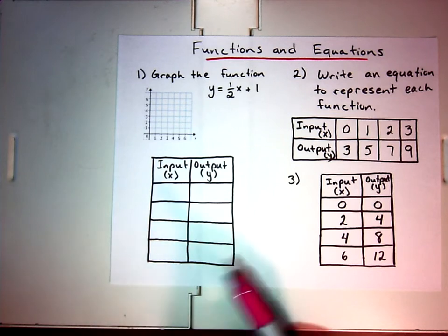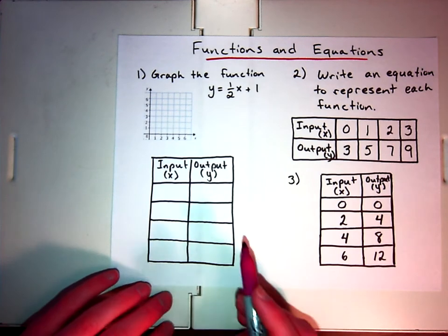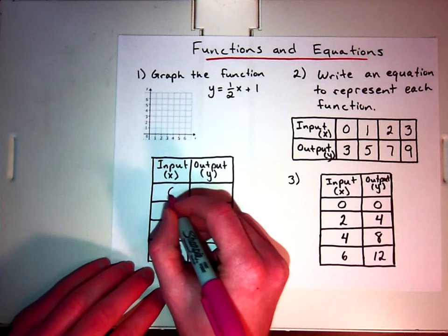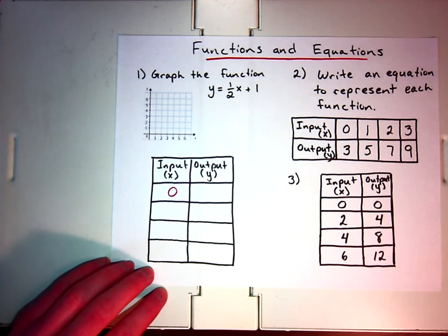So we can basically choose values we want to test. Because remember, for every value of the input, there's going to be one output. So we can put in any input we want. If you notice on the other examples, they have the zero, so let's test the zero. Remember, you could test any numbers you want, but the numbers you choose, it might affect how easy it will be to graph.